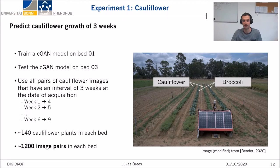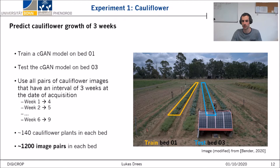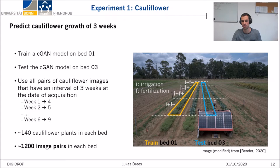Our study site consists of four beds, where two are planted with cauliflower. We divide the field into a training region and a test region. It is also important to mention that parts of the field are put under different conditions in terms of fertilization and irrigation — for example, I+F- means good irrigation but no fertilization. Both training and test beds are divided into four equal-size areas of these conditions. In this first experiment, our goal is to model a growth of three weeks, so we use all images with an interval of three weeks, resulting in 1,200 image pairs per bed.